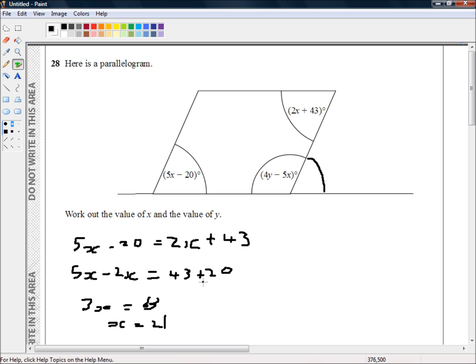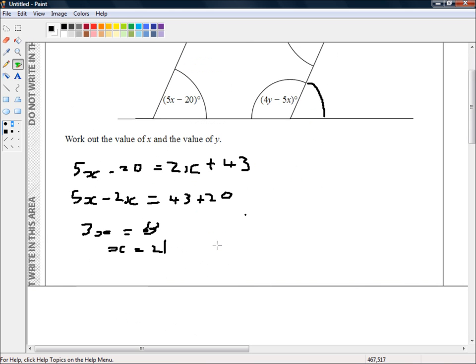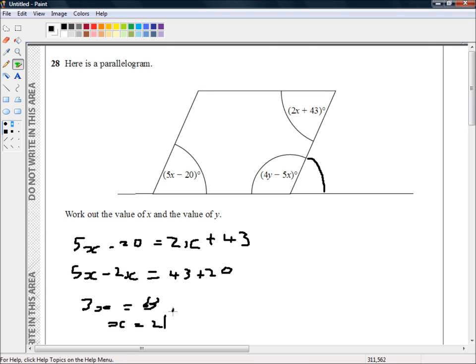Dividing both sides by 3, x is equal to 21. So we now know x is 21 degrees. We're halfway there. We also remember that these two angles add up to 180 degrees.